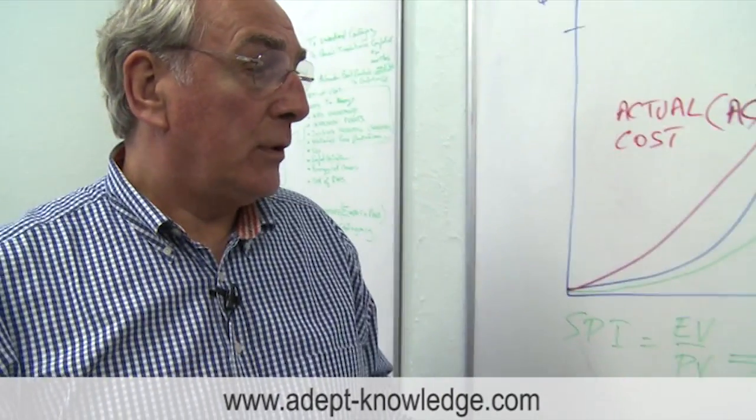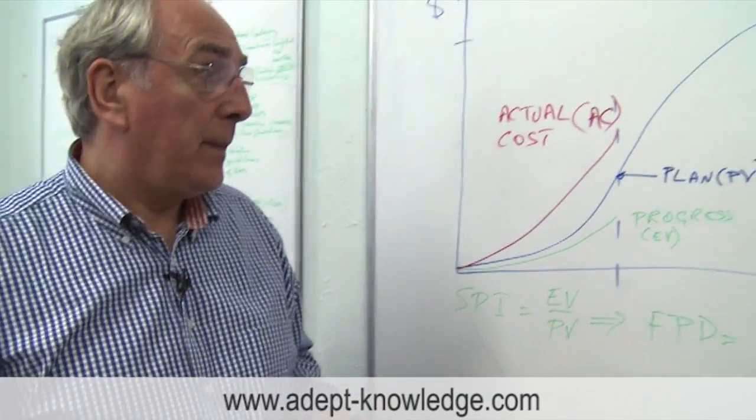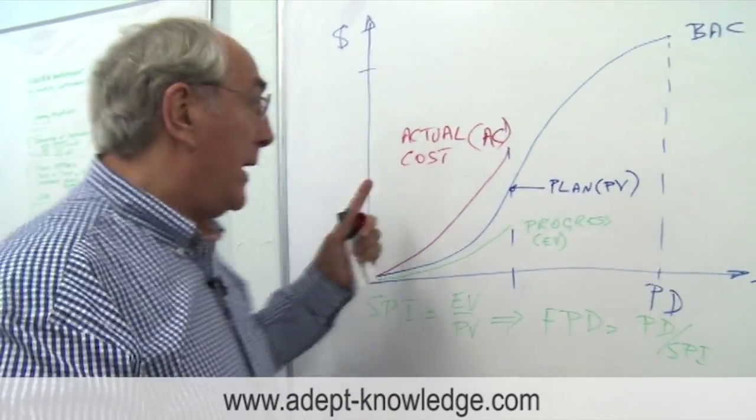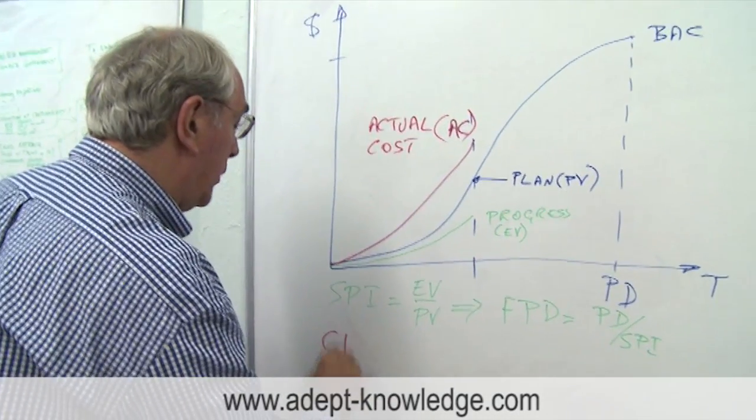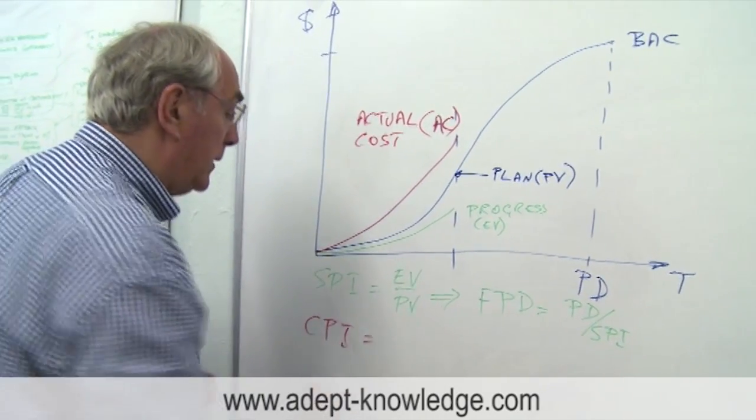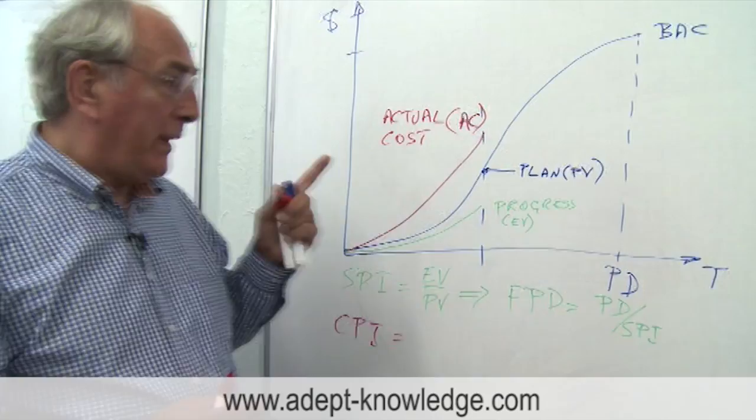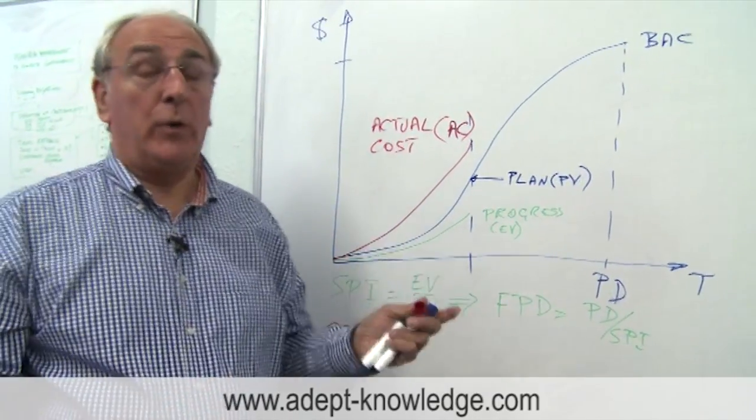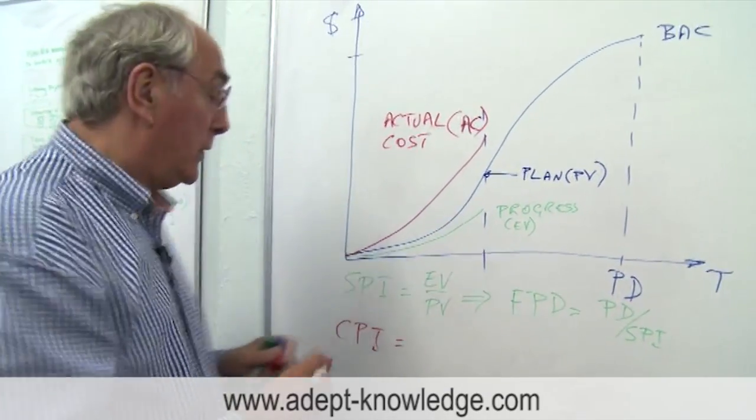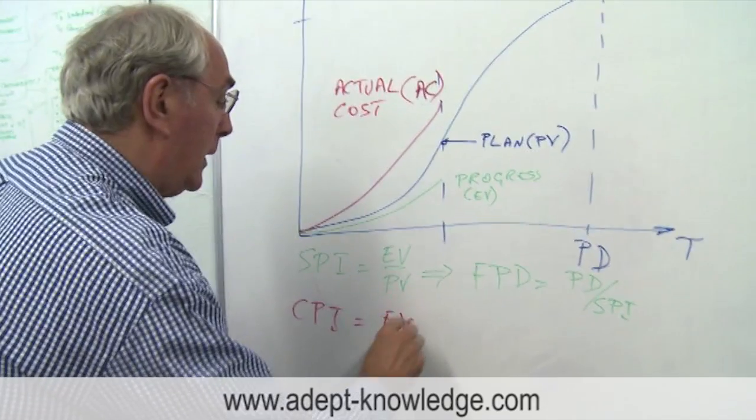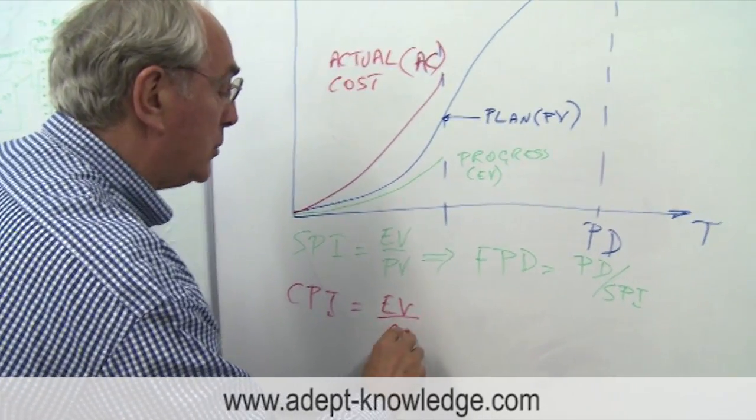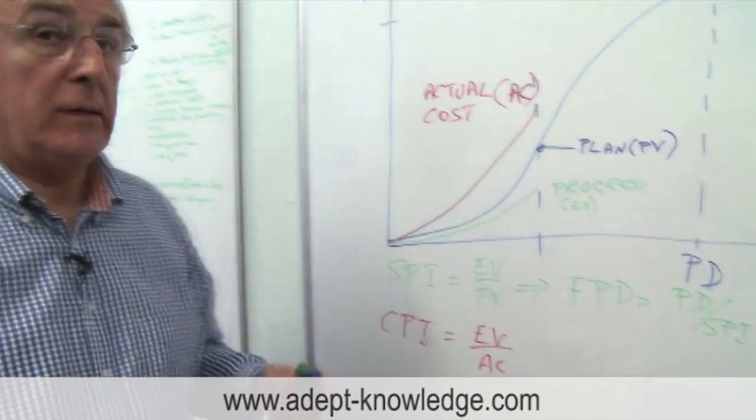So we can now measure what I talked about as being the cost performance index. That cost performance index, some people call productivity or efficiency, and what we're saying is what did we get for what we spent? Well what we got was the earned value. So that's our earned value divided by our actual cost. That's our efficiency or productivity.